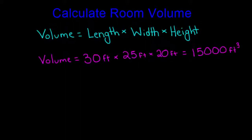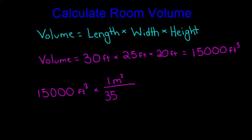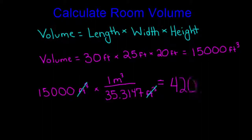In exposure and dose calculations, however, we typically use metric units. In order to change our results to metric units, we simply have to do a unit conversion. There are 35.3147 cubic feet in one cubic meter. Therefore, if we divide our volume of 15,000 cubic feet by 35.3147 cubic feet, we end up with 420 cubic meters.